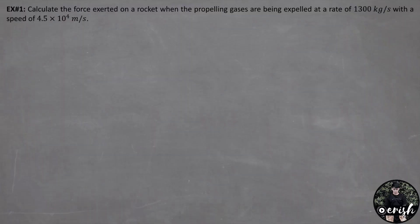Calculate the force exerted on a rocket when the propelling gases are being expelled at a rate of 1,300 kg per second with a speed of 4.5 times 10 raised to 4 meters per second.